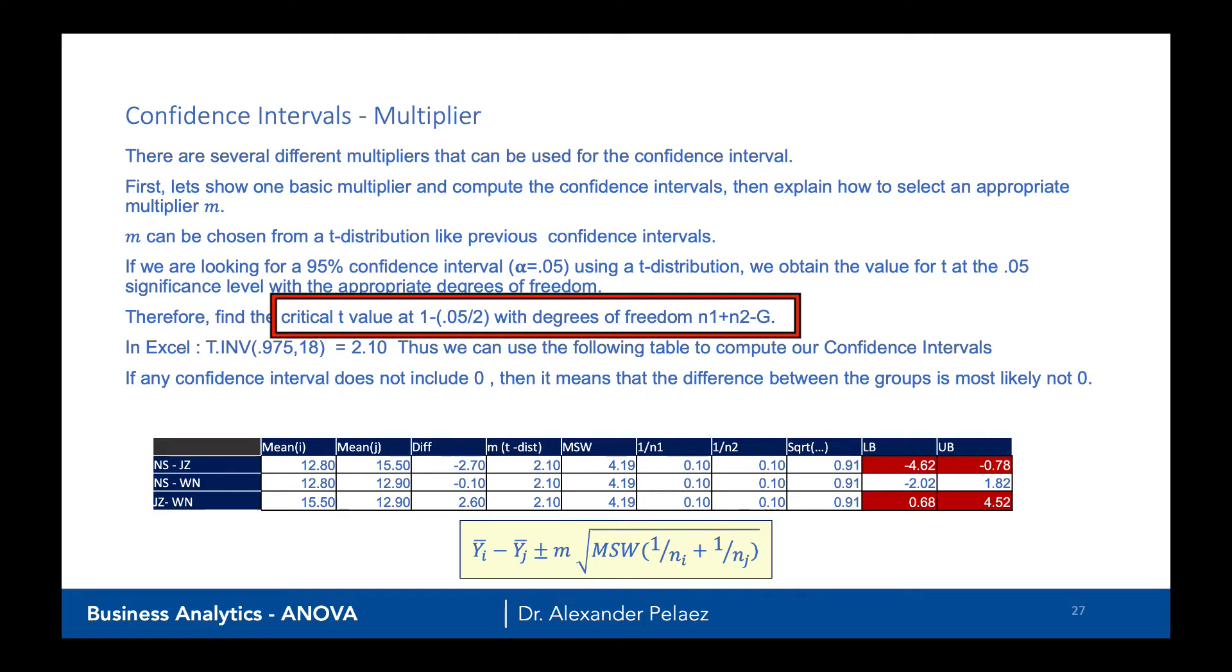The reason we do that is because it's the two tails that we want of the T distribution with degrees of freedom N1 plus N2 minus G, which in our case, number of observations in group 1 plus the number of observations in group 2 minus the number of groups.